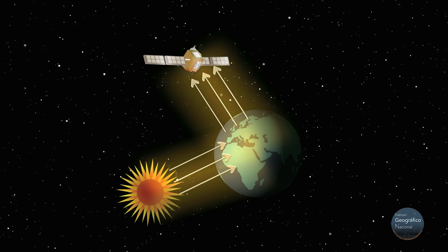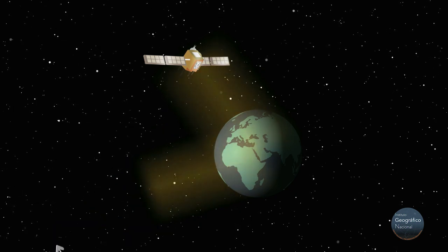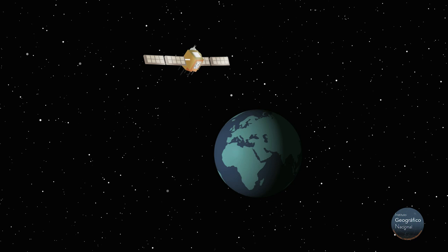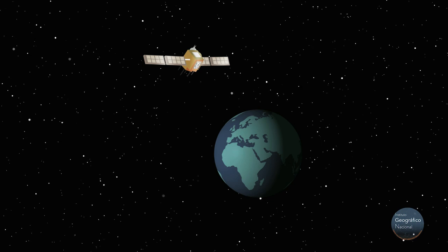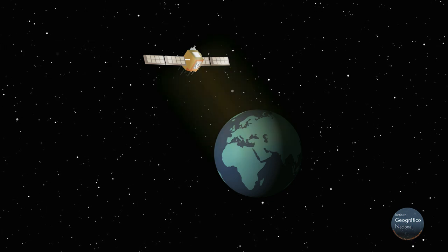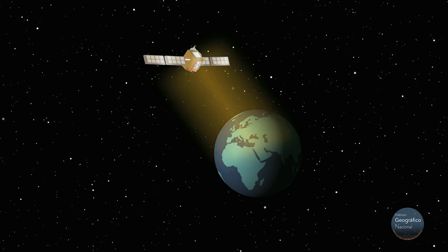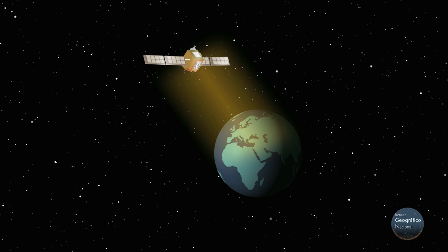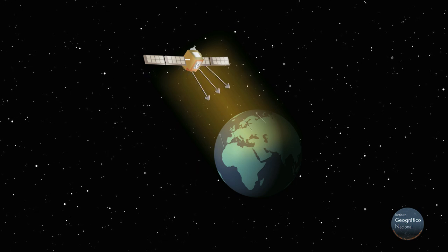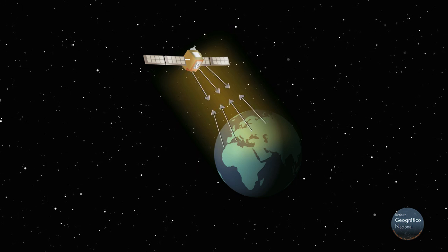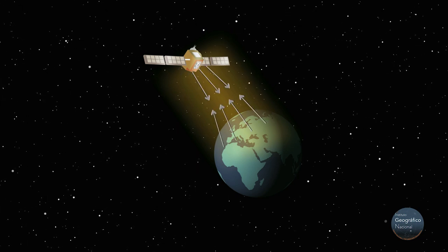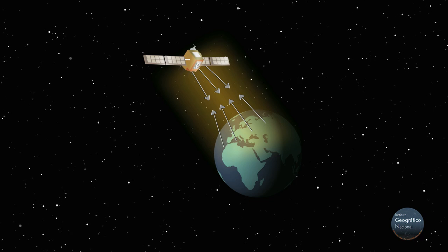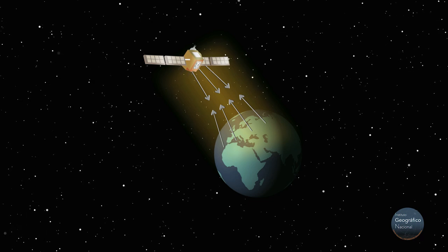With active sensors, the waves come from an artificial energy source. These sensors work as devices that are both emitters and receivers of their own energy. Radar is a type of active sensor.